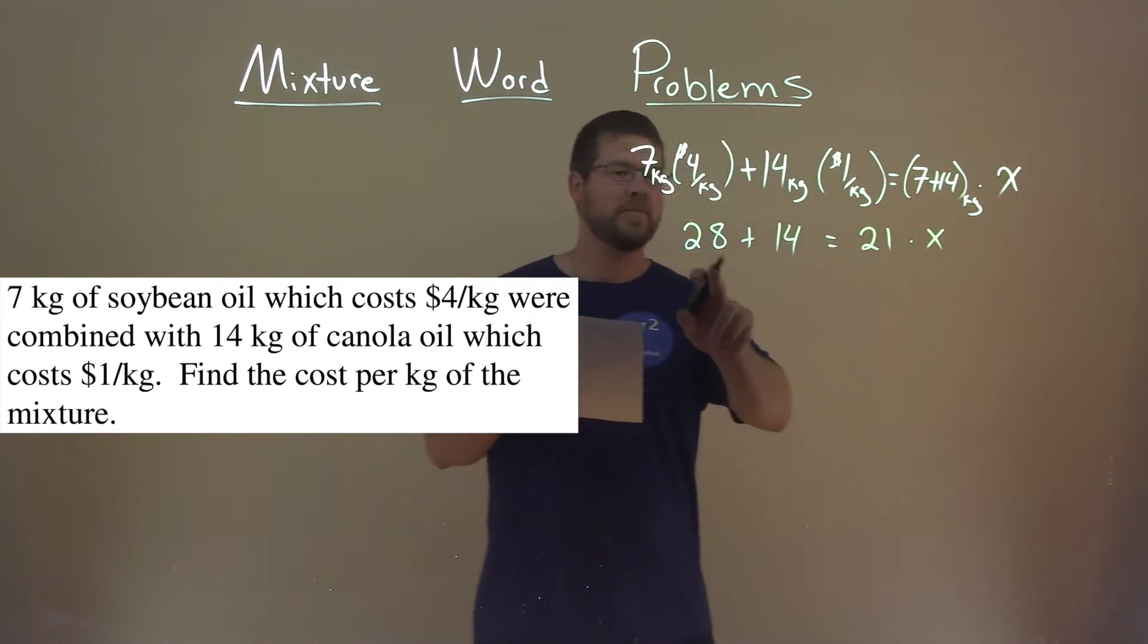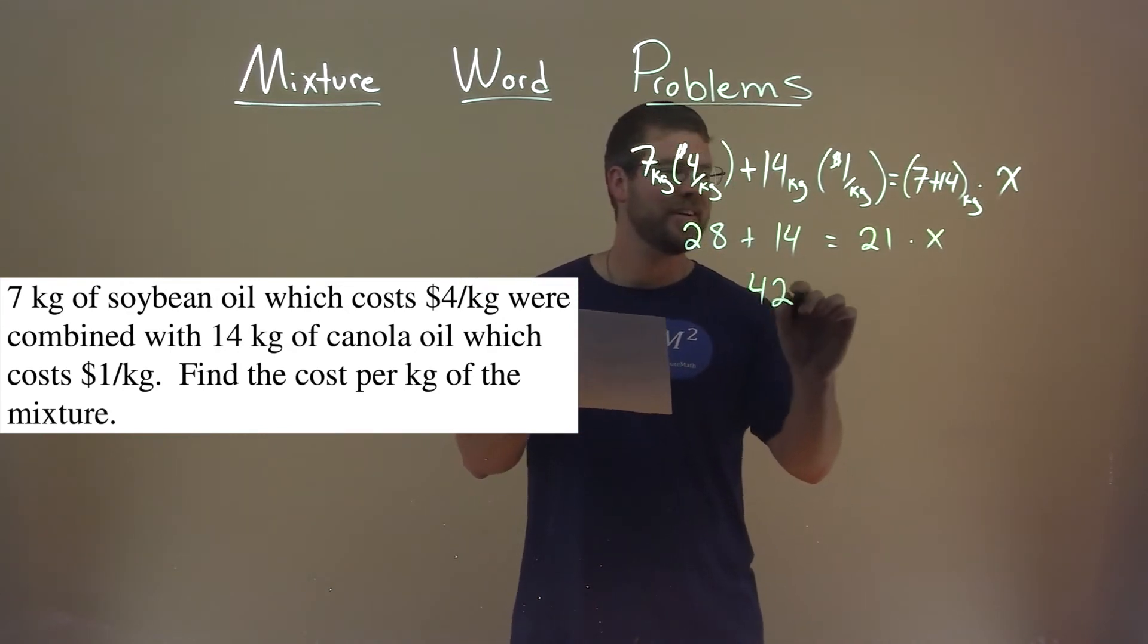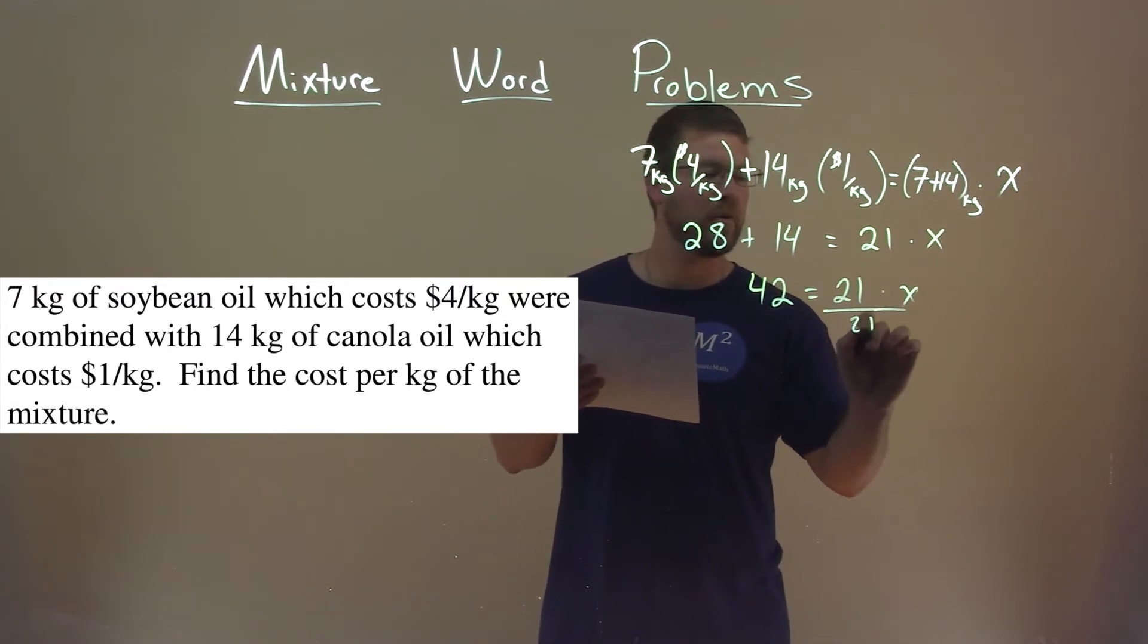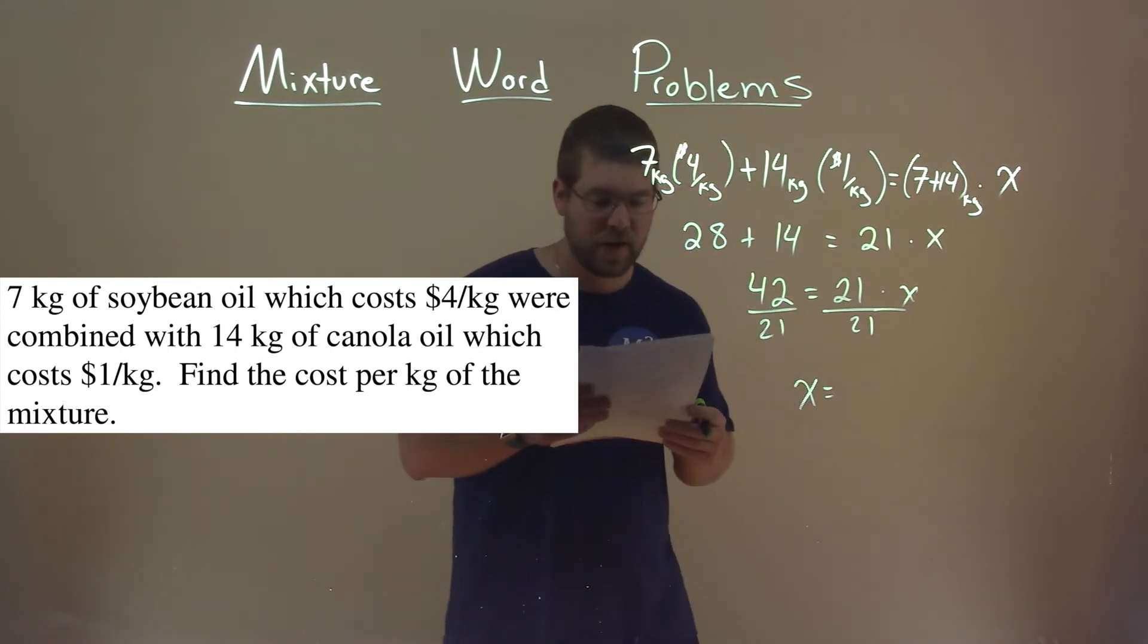So now we simplify. 28 plus 14 is 42, equals 21 times x. Divide both sides by 21. x is by itself, and that comes out to be $2 per kilogram.